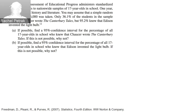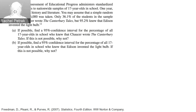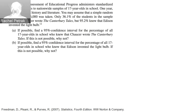Let's look at item five. The National Assessment of Educational Progress administers standardized achievement tests to nationwide samples of 17-year-olds in school. One year the tests covered history and literature. Assume a simple random sample of size 6,000 was taken. Only 36.1% of students in the sample knew that Chaucer wrote the Canterbury Tales, but 95.2% knew that Edison invented the light bulb. If possible, find a 95% confidence interval for the percentage who knew Chaucer wrote the Canterbury Tales.